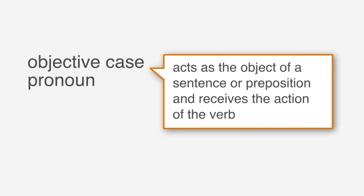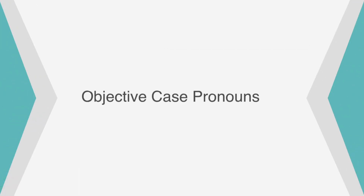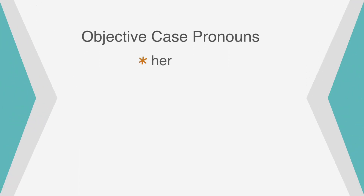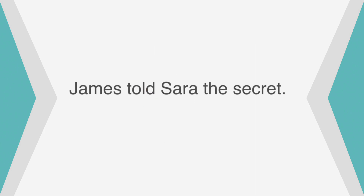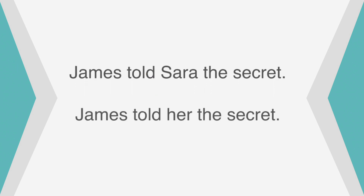The objective case pronoun acts as the object of a sentence or preposition and receives the action of the verb. Objective case pronouns include her, him, it, me, them, us, and you. For example: James told Sarah the secret becomes James told her the secret. In this sentence, secret is the direct object and Sarah is the indirect object. She is being told the secret, so the objective case pronoun her replaces Sarah.